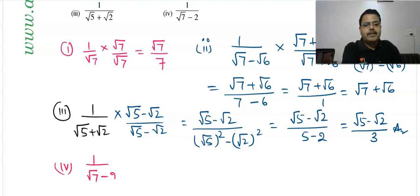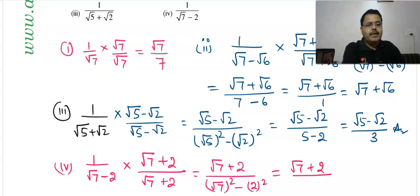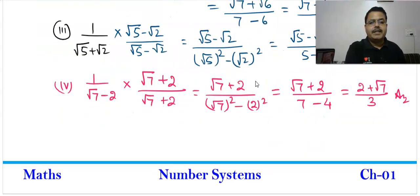Fourth question: 1/(√7 − 2). Multiply by the conjugate (√7 + 2)/(√7 + 2). The numerator is (√7 + 2). The denominator: √7² − 2² = 7 − 4 = 3. So the answer is (√7 + 2)/3.